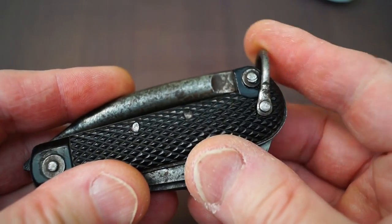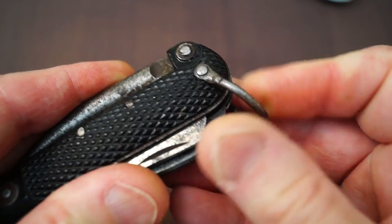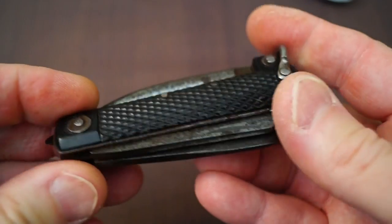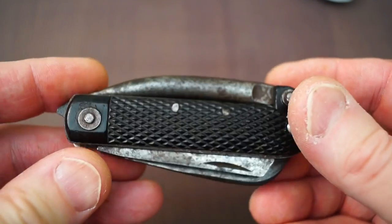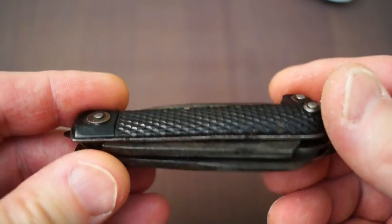And the little lanyard loop, shall we say, only wants to go that way. It doesn't like coming this way. I suppose we'd better have a look and see what it's like cutting stuff, shall we?